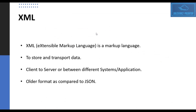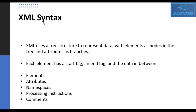XML stands for Extensible Markup Language, which is also used for storing and transporting data — transferring data from client to server or from one system to another. XML is an older format compared to JSON, and there are some legacy systems which are still using XML. XML uses a tree-like structure to represent data, with elements as nodes, attributes as their branches, and each element having a start tag, an end tag, and data in between.